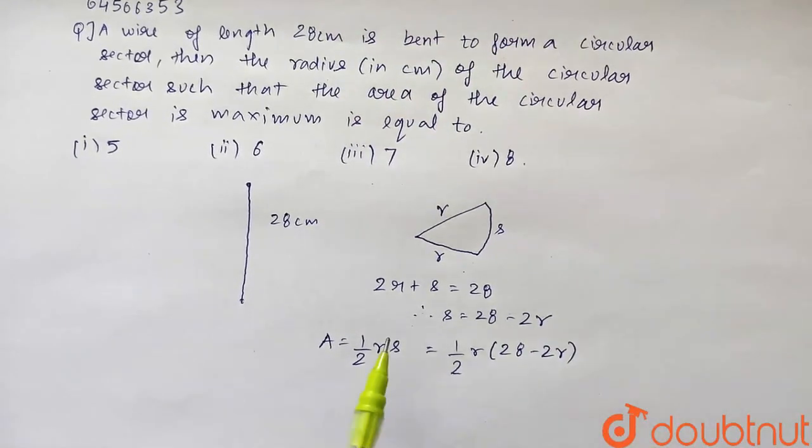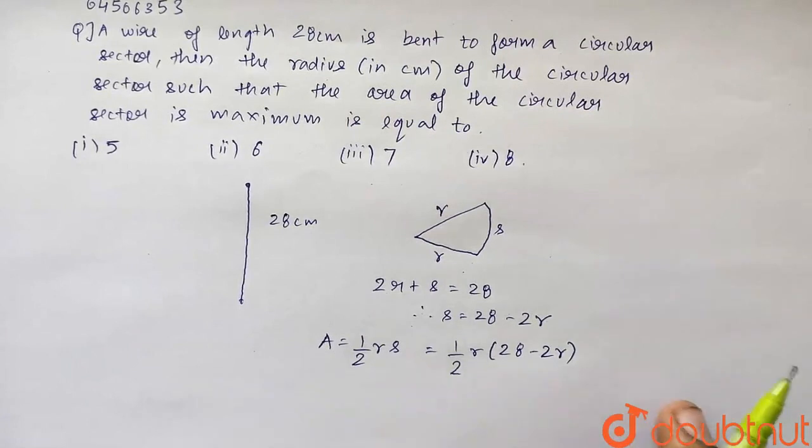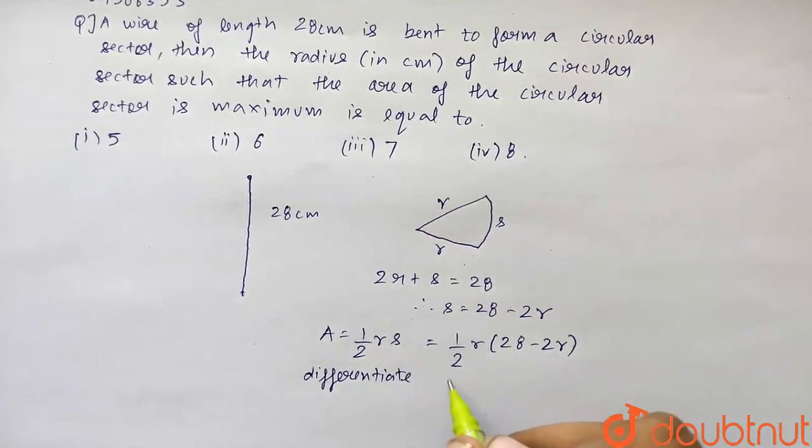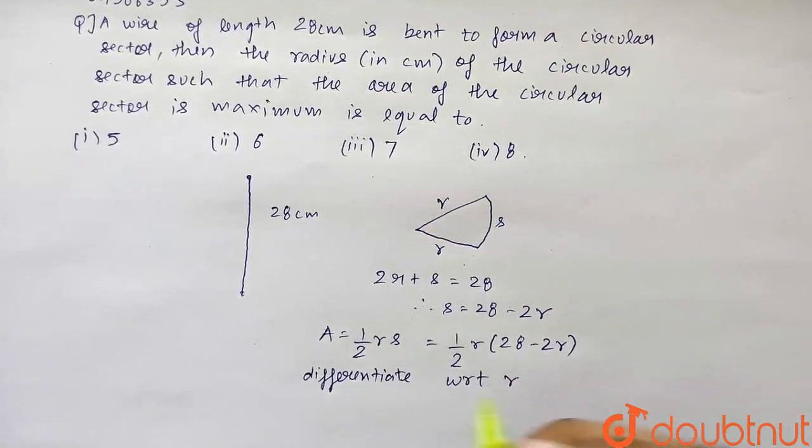So now what we will do is we have to find maximum. We have to make the area maximum. So we will differentiate with respect to R. So now dA by dR is basically, 28 by 2 is 14.